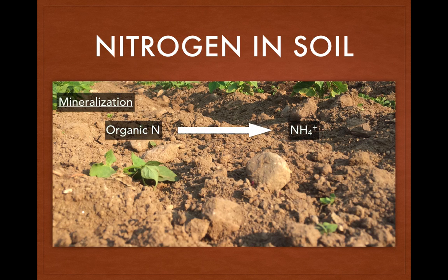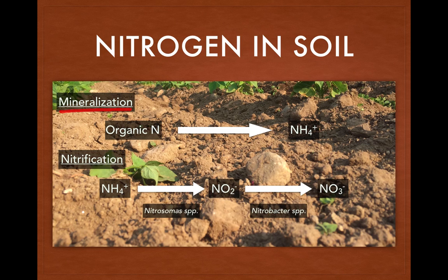When things die and decompose, organic nitrogen is converted into ammonium by the process of mineralization, which is done by a number of bacteria and fungal organisms. Then ammonium is converted first to nitrite and then to nitrate through the process of nitrification, which is done by bacteria.